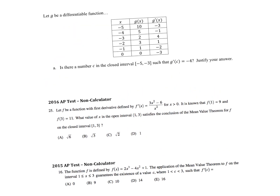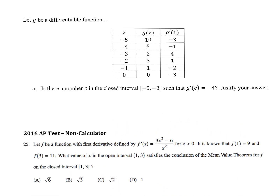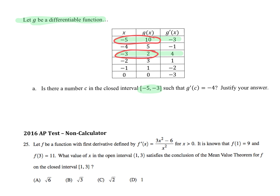On page three I gave us a big chart. It says: is there a number c — an x value — between negative five and negative three, such that the slope is negative four? Let g be a differentiable function — that was important. Between negative five and negative three, is my slope going to have to equal negative four there? Let's go find my average slope. What points would I use? Negative five, 10 and negative three, 2 are just points on g. What would be my average slope — what minus what over what minus what?